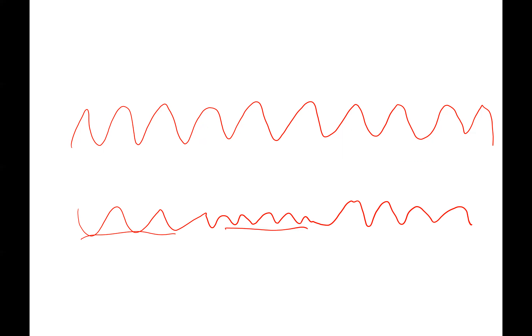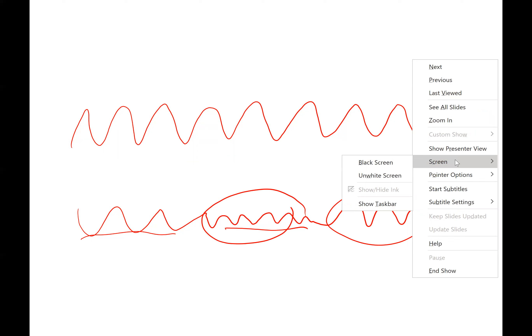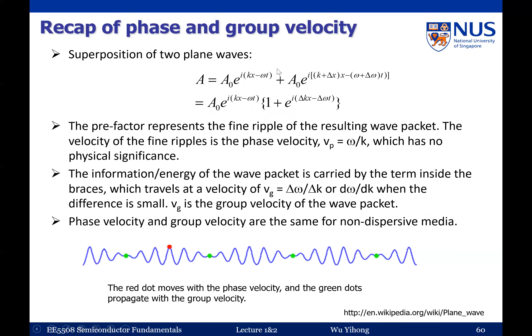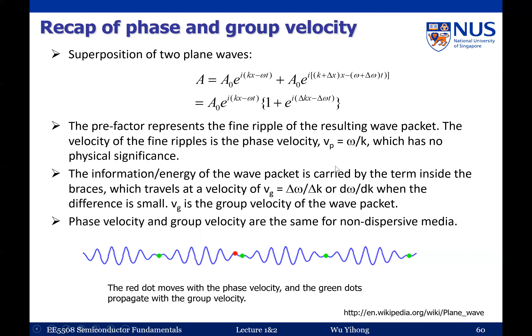These modulated waves are called wave packets, because you have a packet that is moving. This gives you a way to pack information and energy in space. To do this, you just need to add two waves with slightly different wave number and frequency, and you can have this kind of wave packet.